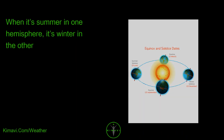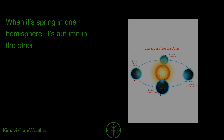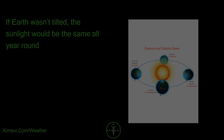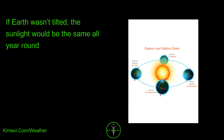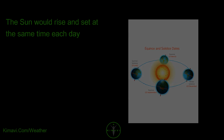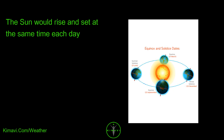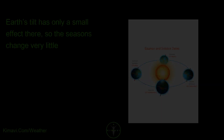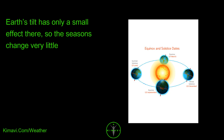When it's summer in one hemisphere, it's winter in the other. When it's spring in one hemisphere, it's autumn in the other. If Earth wasn't tilted, the sunlight would be the same all year round. The sun would rise and set at the same time each day. There would be no seasons. This is what it's like near the equator, the imaginary line that circles the planet around its middle. Earth's tilt has only a small effect there, so the seasons change very little.